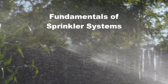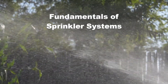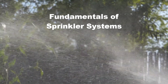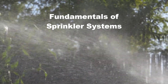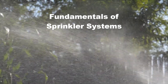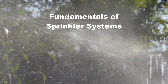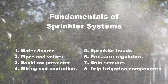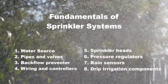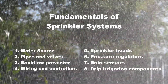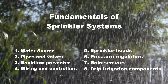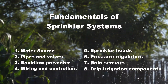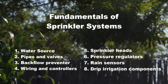A typical sprinkler system consists of several major parts that work together to ensure effective water distribution. These parts include water source, pipes and valves, backflow preventer, wiring and controllers, sprinkler heads, pressure regulators, rain sensors, and drip irrigation components.